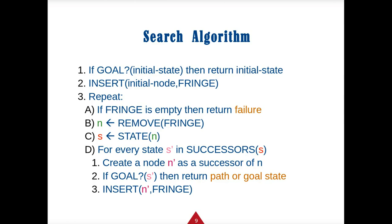The basic blind search algorithm is: if we're already in the goal, return the initial state. If not, insert the initial node into the fringe, then keep repeating until we run out of moves or reach our goal, looking at every successor state. For the upcoming maze assignment, the maze is randomly generated, and some mazes have no reachable goal — so you need to figure out how to handle and stop that case.